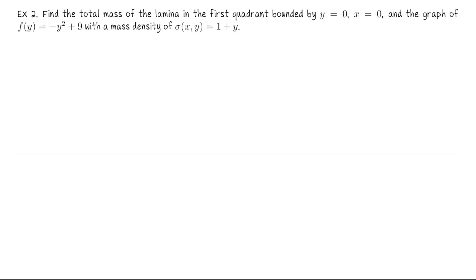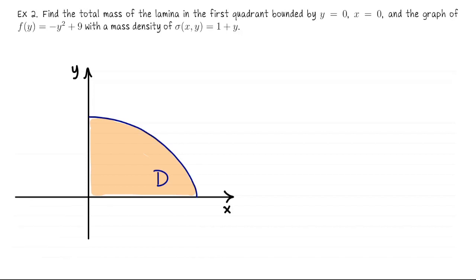Let's do a quick example. Find the total mass of the lamina in the first quadrant bounded by y equals 0, x equals 0, and the graph of f of y equals negative y squared plus 9 with a mass density of sigma of x and y equals 1 plus y. The first thing to do is sketch a picture. The function we're given is really like x is a function of y. That's a parabola opening to the left. Consequently the y-intercept is 3, the x-intercept is 9. This shape in here is our lamina.